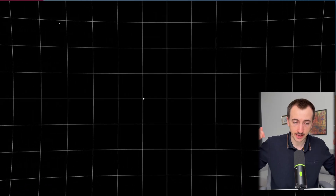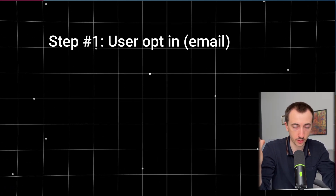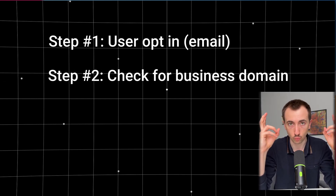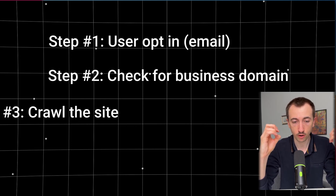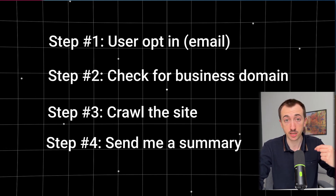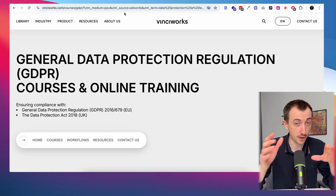I'm going to take a very specific example, because for most businesses, when they think about things they want to automate, it'll probably be something they won't find in a template or video tutorial. The workflow I'm trying to build is: when an email comes through an opt-in for my mailing list, and that email is from a real business domain, I want the workflow to crawl their website, summarize the information, and send me an email with a summary of what that business does so that if I'm interested, I can reach out to them.